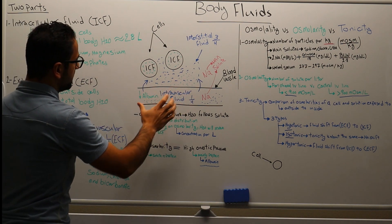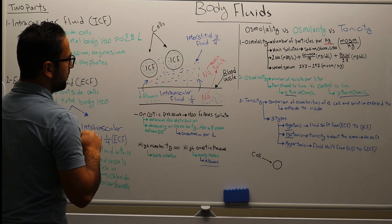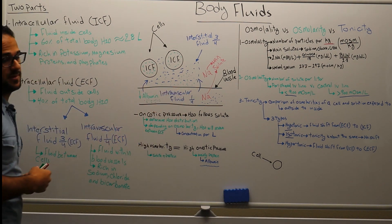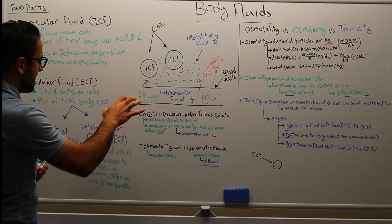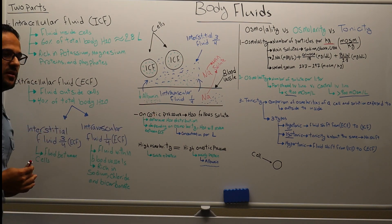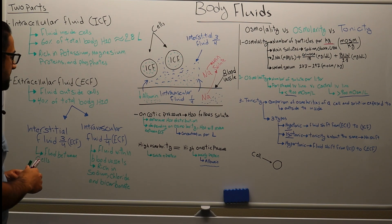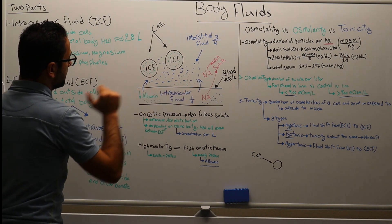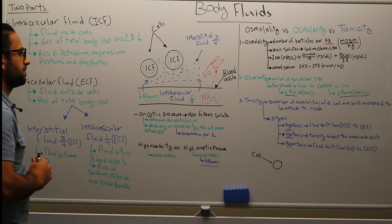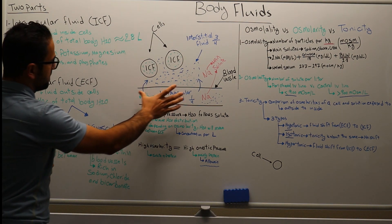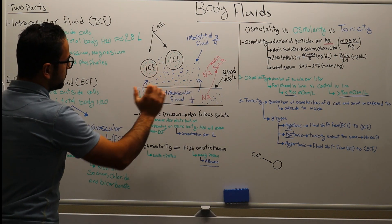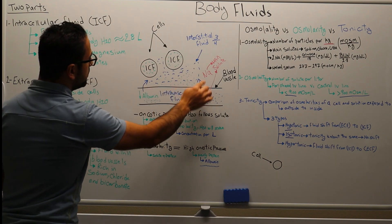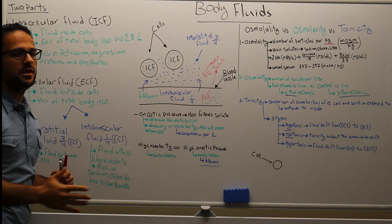The second part of the extracellular fluid is the intravascular fluid, which is one-fourth of the total extracellular fluid. The intravascular fluid is in the blood vessels where there is plasma, and it is rich in several solutes — for example, sodium, chloride, and bicarbonate.